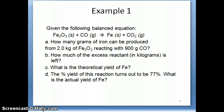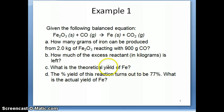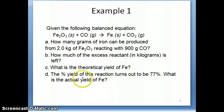We now address two more questions related to yield. Part C asks for the theoretical yield of iron — that is, the amount expected if all the limiting reactant is consumed. We already calculated this: it's the same answer as part A, which is 1200 grams. This question tests whether you understand that what you calculated in part A is, by definition, the theoretical yield.